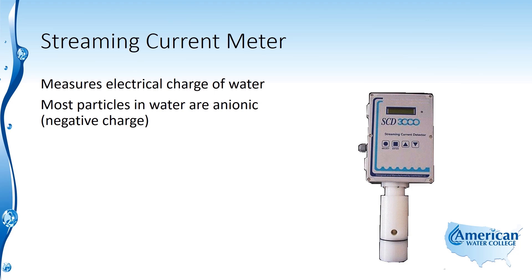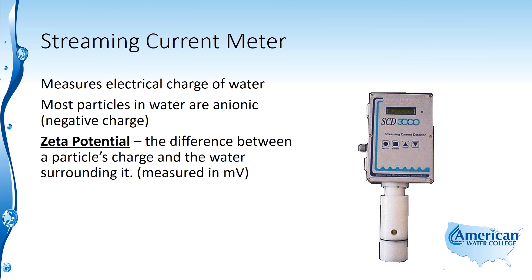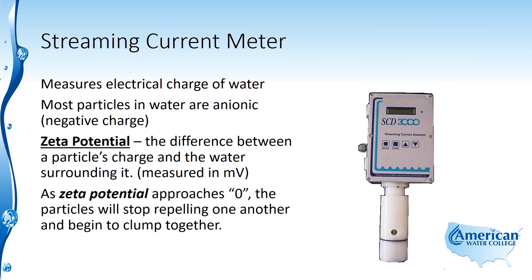Most particles in water are anionic, which means they carry a negative charge, and that's the zeta potential. The zeta potential is the difference between a particle's charge and the water surrounding it, and the units for zeta potential are millivolts. As zeta potential approaches zero, the particles will stop repelling one another and begin to clump together. So we want the zeta potential to approach zero, or the magnitude of the negative charge to get smaller and smaller, so that flocculation can occur.